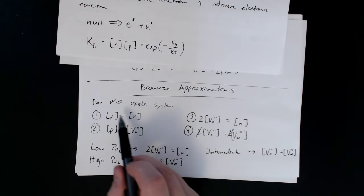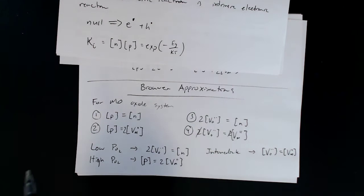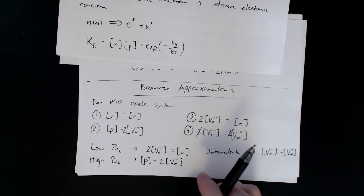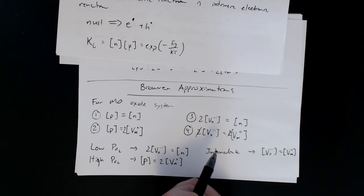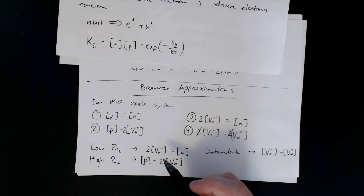So these are all the valid Brouwer approximations that simplify the electroneutrality statement along with all of the expressions from mass action. What we're going to do in the next videos is we're going to use all of that information that we've just kind of pieced together, and we're going to see if we can construct the Brouwer diagrams, see if we can kind of get the same slopes that they get in the region that you see in the Brouwer diagram. So that's what we're going to do in the next ones: we're going to work and look at each different defect species and see if we can conclude what the relationship of that species concentration is with the oxygen partial pressure.